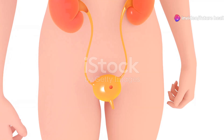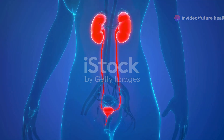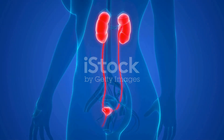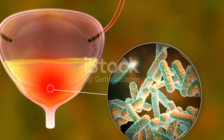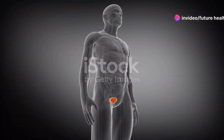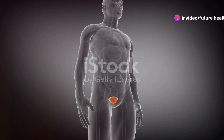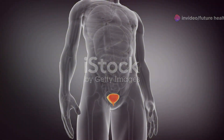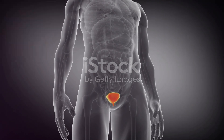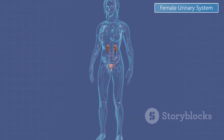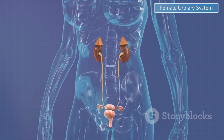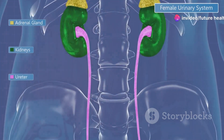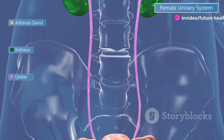Understanding UTIs is vital for women because we are more susceptible to them due to our anatomy. Factors like a shorter urethra and proximity to the rectal area increase the risk. Our urethra is shorter than men's, making it easier for bacteria to travel to the bladder. This anatomical difference is a key reason why women experience UTIs more frequently.